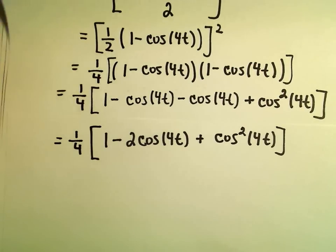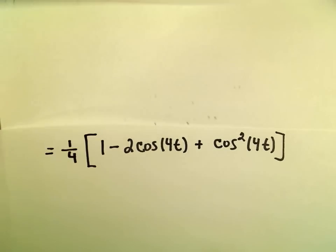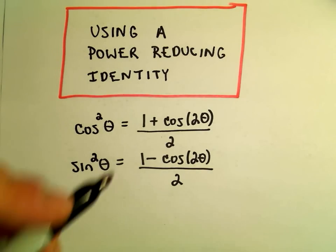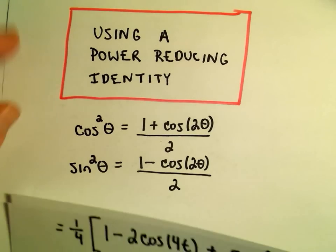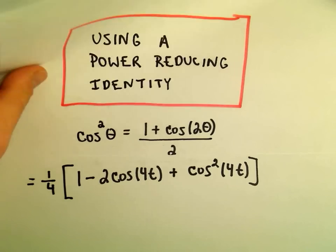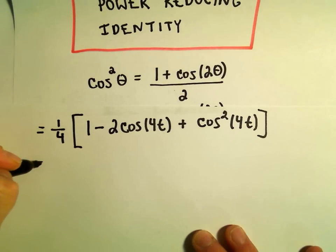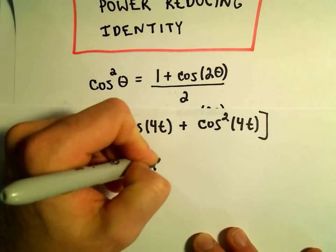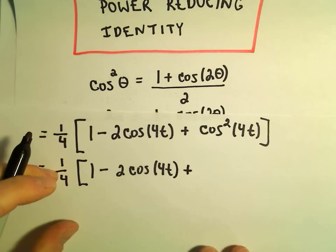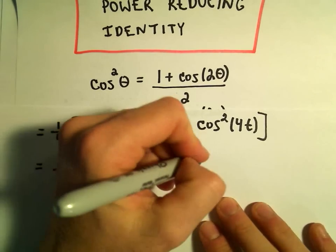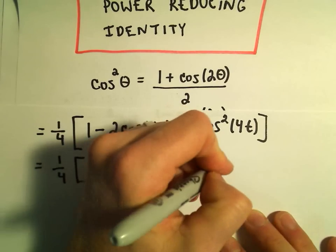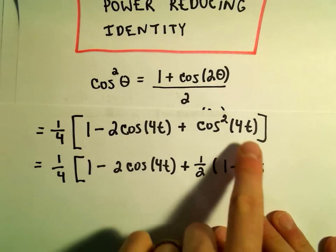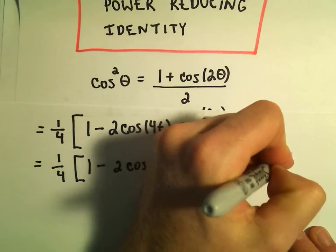Now I'm going to use the other identity for cosine squared of 4t. Notice the only difference between the two identities is just the positive and the negative. So we still have the 1 fourth out front, and 1 minus 2 cosine of 4t. Then I'll pull the 1 half out front for the cosine squared identity: 1 plus cosine — and since we've got 4t, if we double that we'll get 8t.